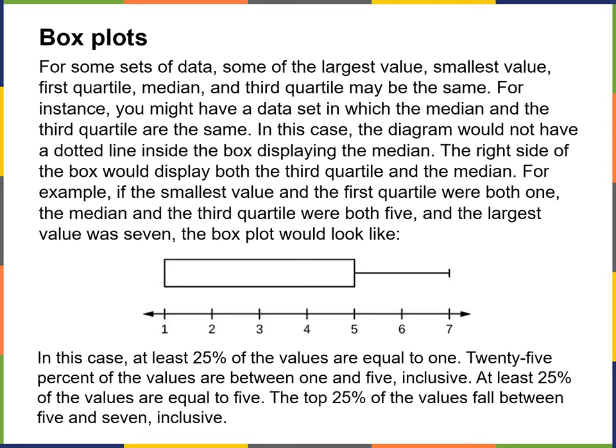In this case, at least 25% of the values are equal to 1. 25% of the values are between 1 and 5, and at least 25% of the values are equal to 5. The top 25% of the values fall between 5 and 7 inclusive. So it's a shorter box with a longer whisker off to the right because your last value is 7.